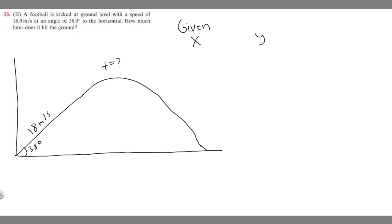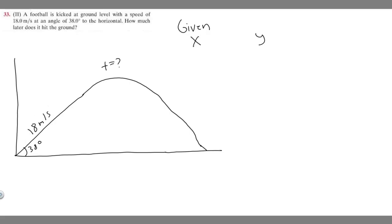The first thing you want to do if you have an angle problem — something traveling at an angle — is find the vector components. When we try to find the initial velocity for our x and y components, we have to break this vector down first. If you imagine this as a triangle, this side is x and this side is y.